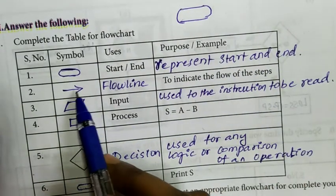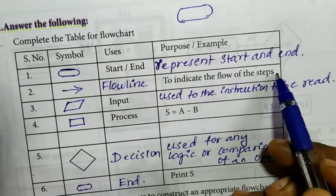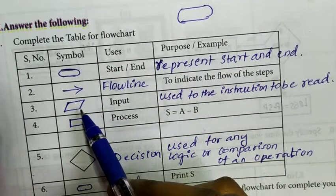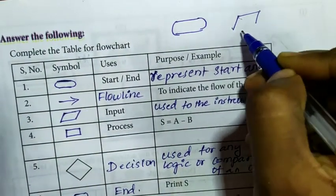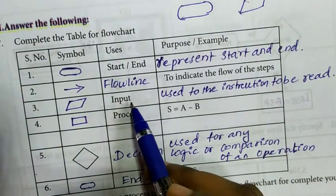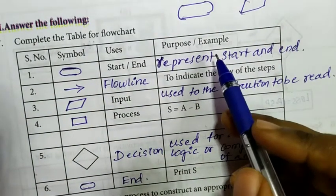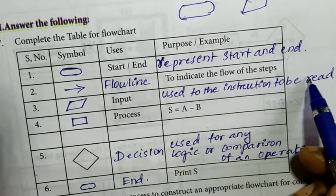Second, arrow mark, that is flowline, to indicate the flow of the steps. Third symbol, parallelogram symbol, that is used as an input. Purpose is use it to the instruction to be read.